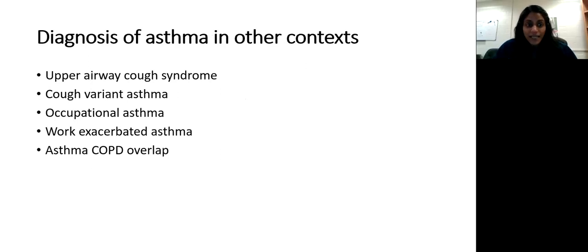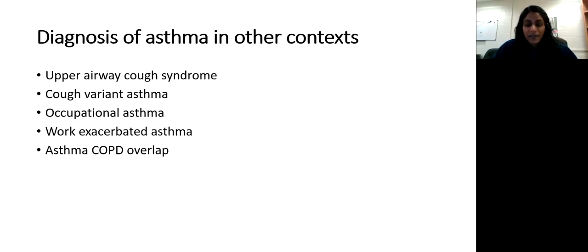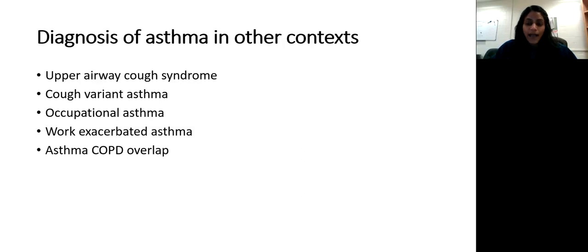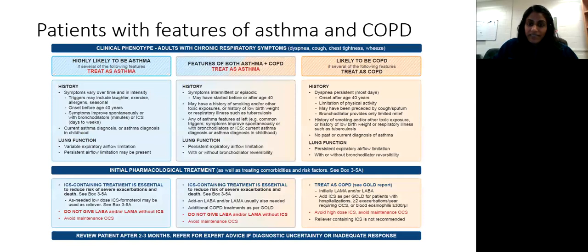Common diagnoses to consider in context: upper airway cough syndrome; cough-variant asthma, which predominantly presents with cough (though most patients also have other symptoms when you elicit more history); occupational asthma, which is worse at work and better when away; work-exacerbated asthma, where underlying asthma is aggravated by the workplace; and the concept of asthma-COPD overlap, which was previously in the 2020 guidelines but was removed in the 2022 GINA guidelines.